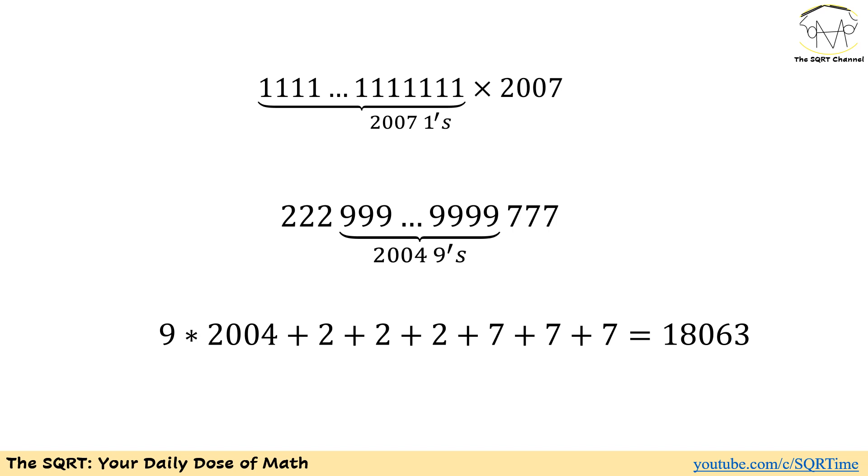If you go back to the previous case, you see that for 5 ones we are going to end up with 2 nines. As a result, if you continue this pattern, we are going to have 2007 minus 3, or 2004 nines in the middle.